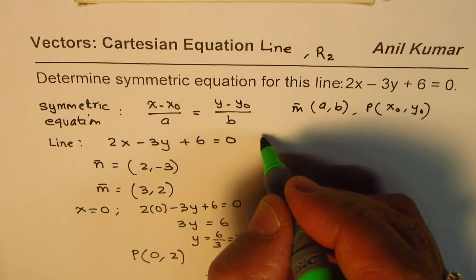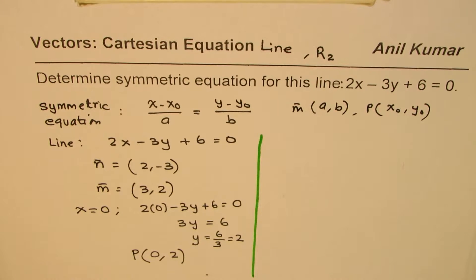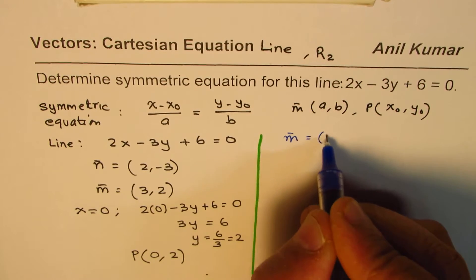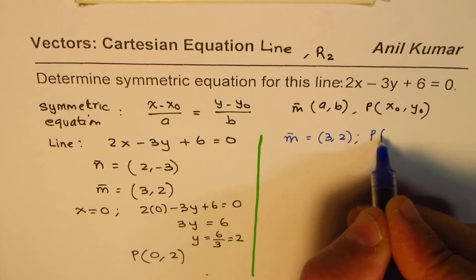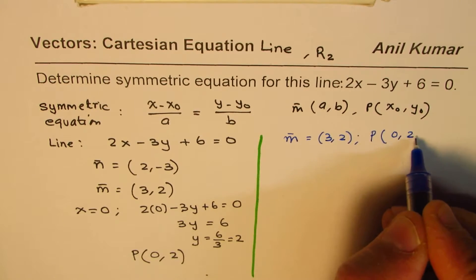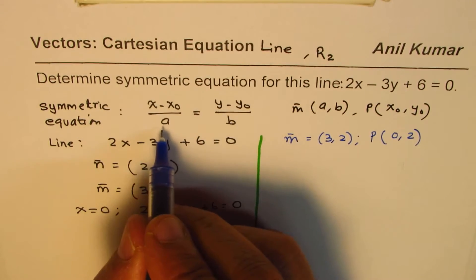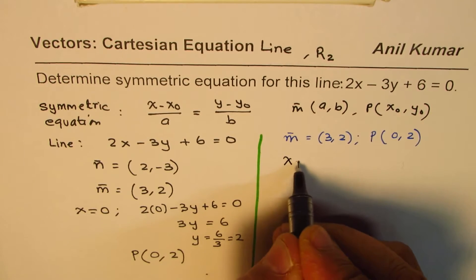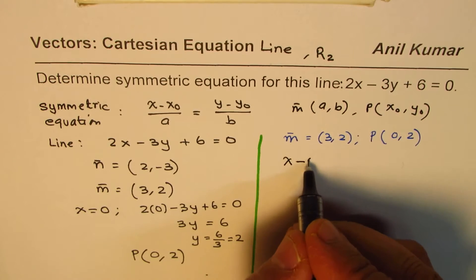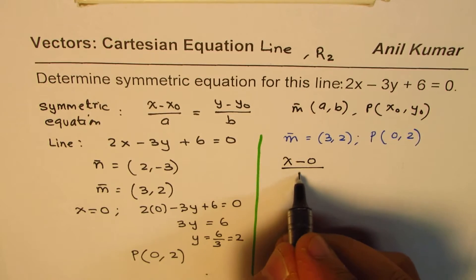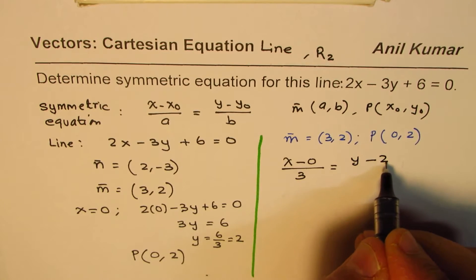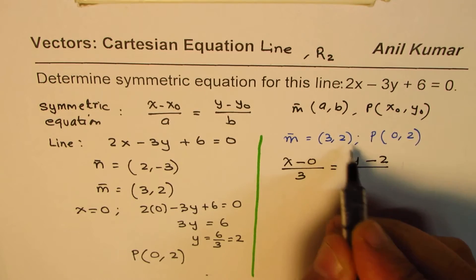Now, with this information, we can clearly write down the symmetric equation. So, what we have here is the direction is 3, 2, and the point given to us is 0, 2. So, we can apply on this equation and write it down. So, we can write x minus x value of 0 divided by 3 equal to y minus y value of 2 divided by 2.